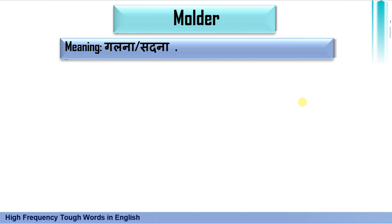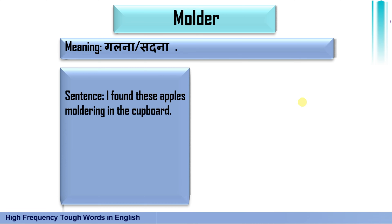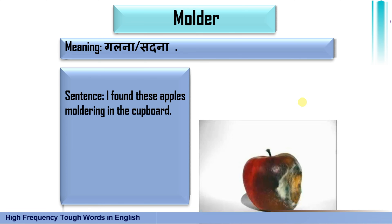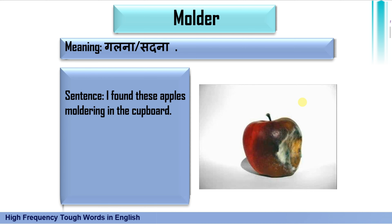The next word is 'molder,' which means galna ya sadna. The sentence I have formed: I found these apples moldering in the cupboard — mujhe ye apple sadha hua mila in the cupboard. So molder means galna ya sadna.